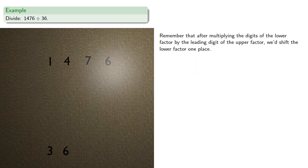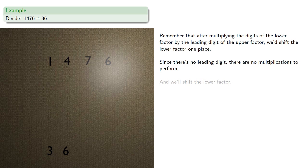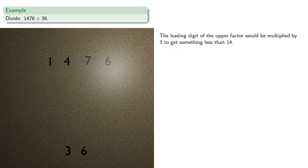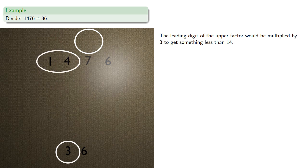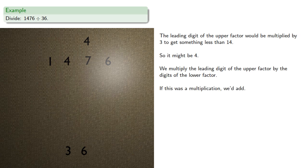Next, remember that after multiplying the digits of the lower factor by the leading digit of the upper factor, we'd shift the lower factor one place. Since there's no leading digit, there are no multiplications to perform, and we'll shift the lower factor. Now the leading digit of the upper factor would be multiplied by 3 to get something less than 14 — so it might be 4. We'll multiply the leading digit of the upper factor by the digits of the lower factor. And if this was a multiplication we'd add, but since this is a division, we'll subtract.